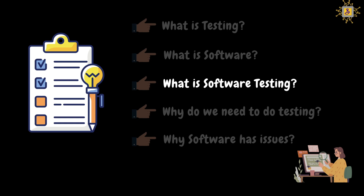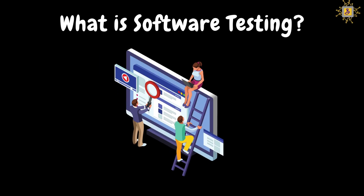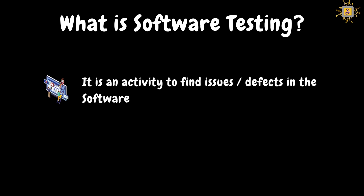So now we know what software is. So, what is software testing? Software testing is an activity to find issues or defects in the software. It is a process to check whether the software has any issues or defects.